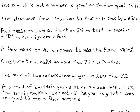The sum of 8 and a number is greater than or equal to 11. The first keyword that stands out is 'sum,' so we're going to have 8 plus something — the sum of 8 and a number. We're not told what this number is, so it's a variable. We'll say 8 plus n. Then 'greater than or equal to' gives us that symbol. So the inequality is 8 + n ≥ 11, depending on what the number is.